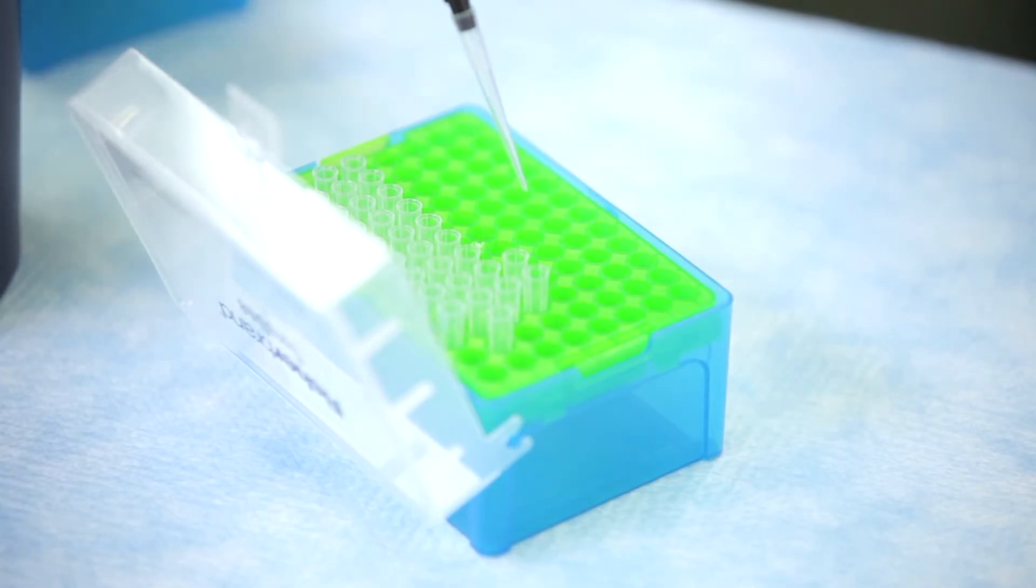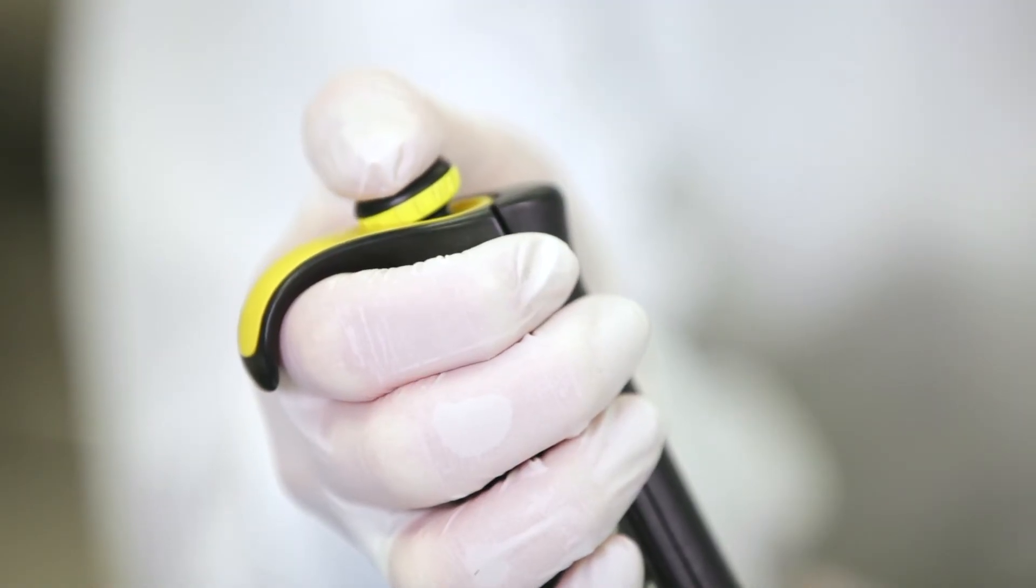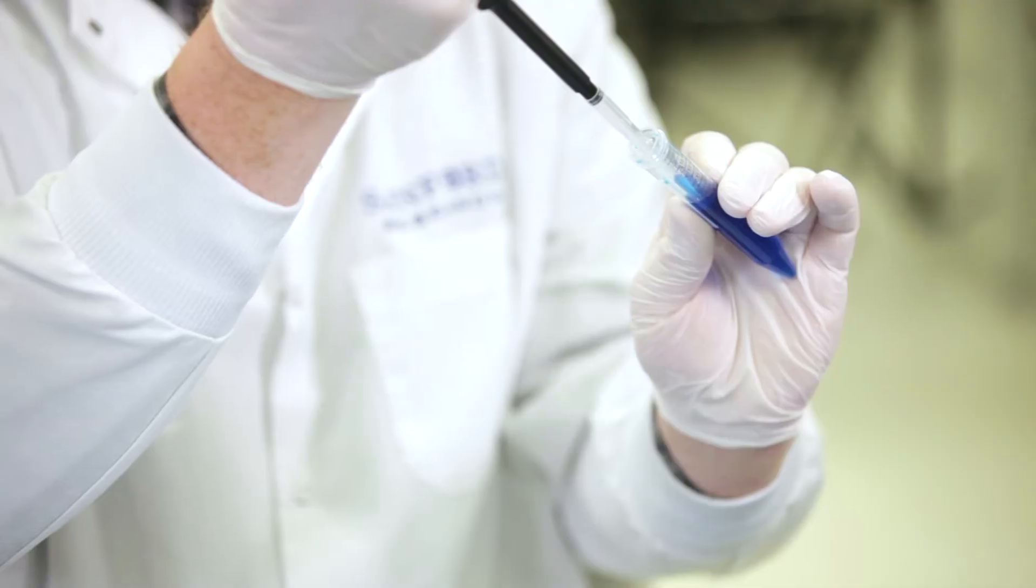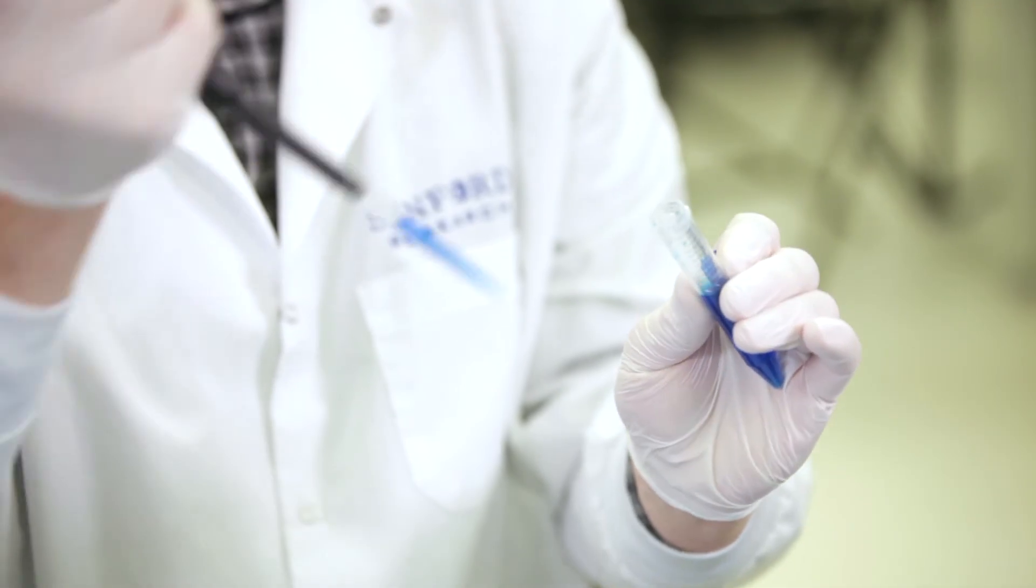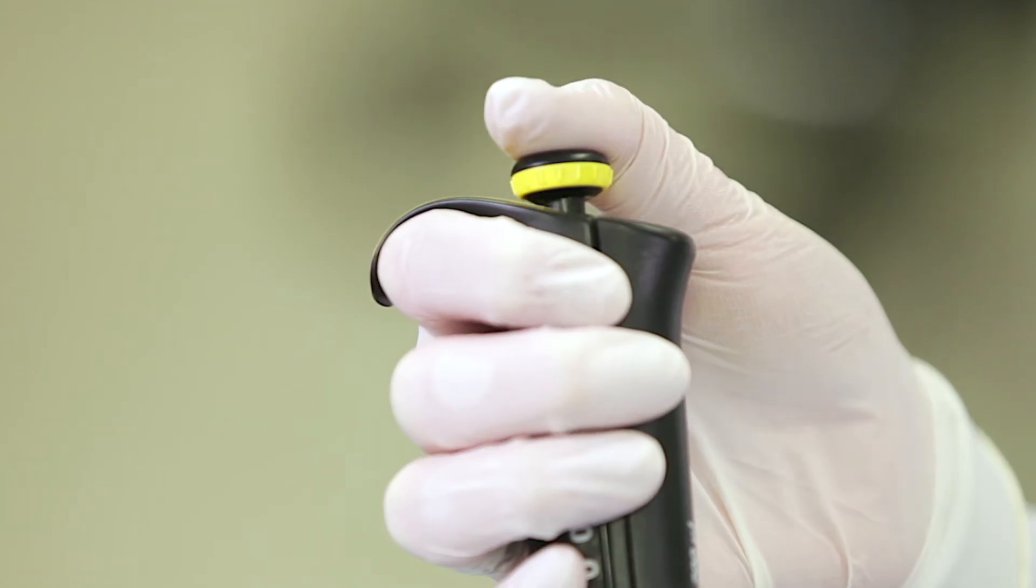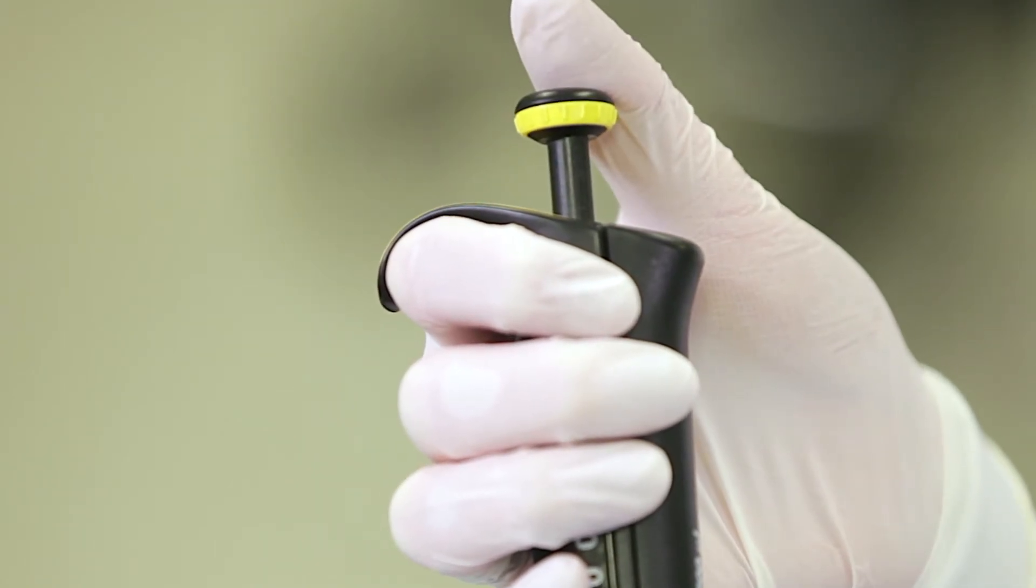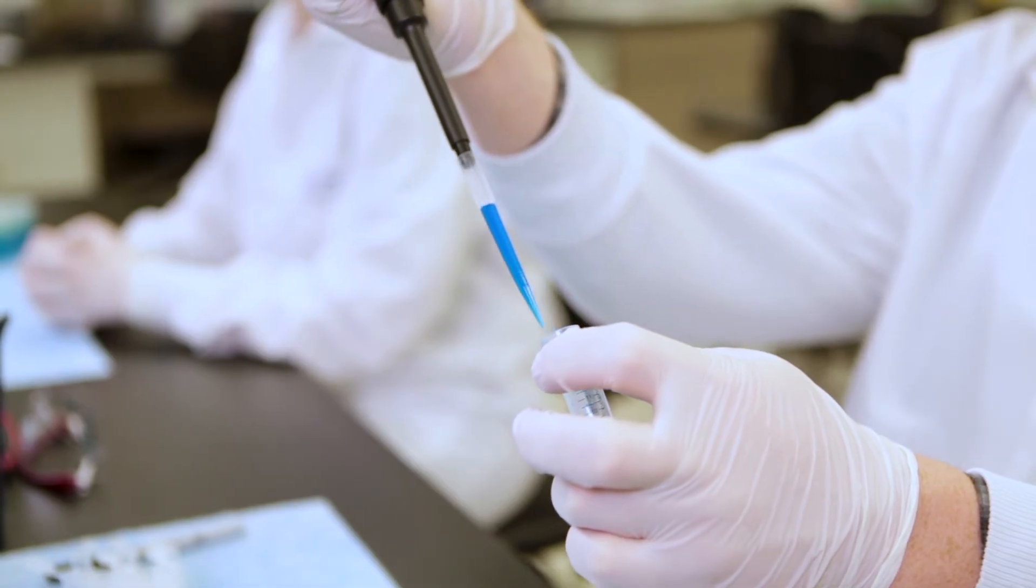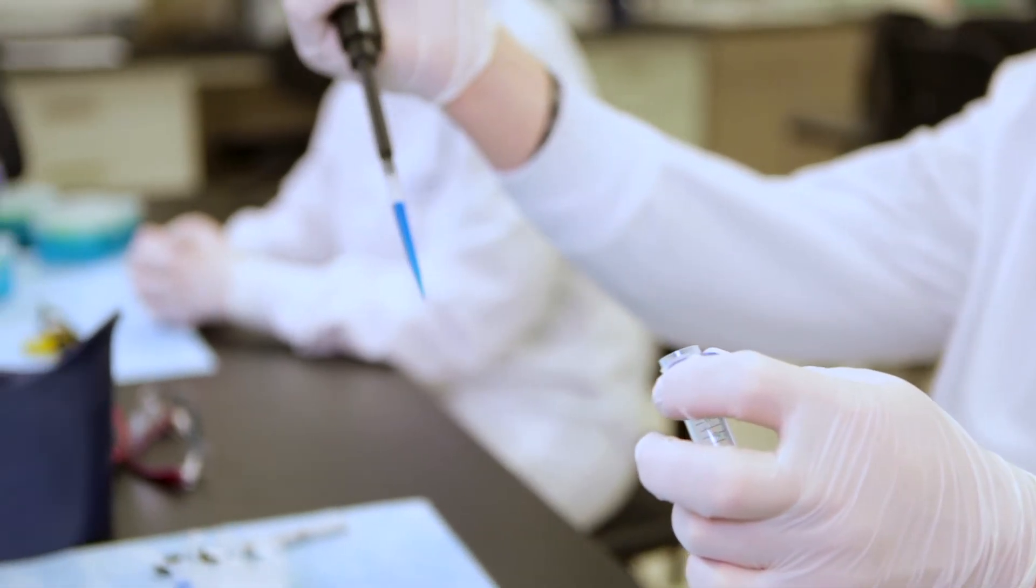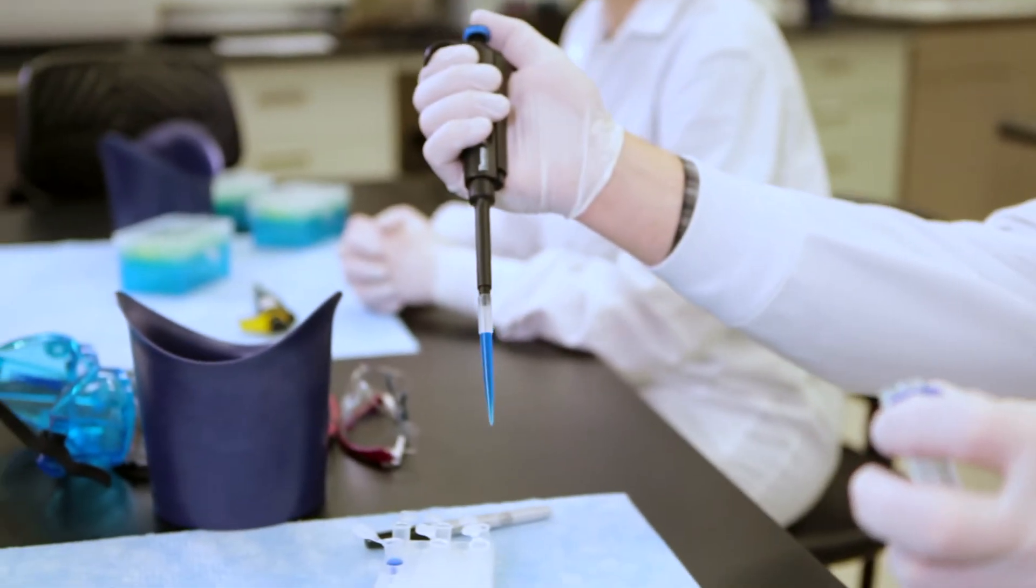To use the pipette, depress the plunger to the first stop. Keep the plunger at this level, submerge the tip just past the level of the liquid you want to draw up. Slowly release the plunger, allowing it to return to its original position. Pause for a second to make sure all of the required volume has been taken into the tip. This is especially important when pipetting more viscous, or thicker, materials.